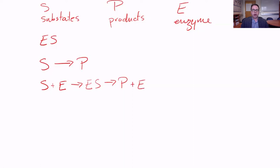Because they form complexes with substrates, enzymes carry out reactions one at a time — they don't catalyze multiple reactions simultaneously. Once they've catalyzed one reaction, they can be reused to catalyze a reaction between another group of substrates. Because of this, enzymes are an interesting case study of zero-order kinetics.